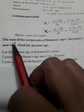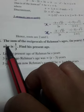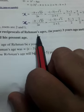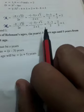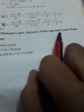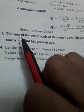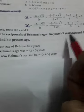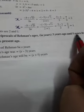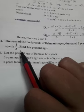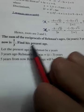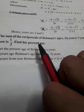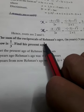Now we can discuss word problems. Question 4: The sum of the reciprocals of Rahman's age 3 years ago and 5 years from now is 1 by 3. Find his present age. So first we want to take the present age as X.